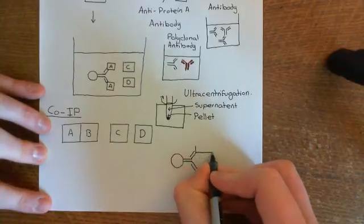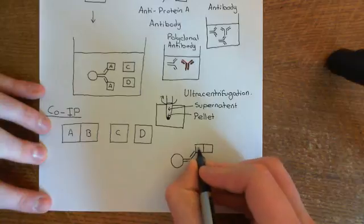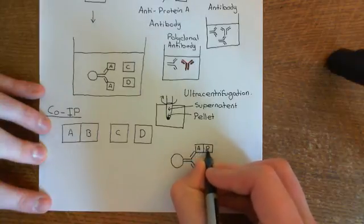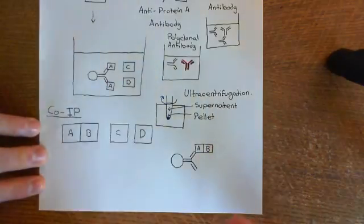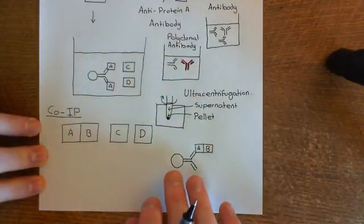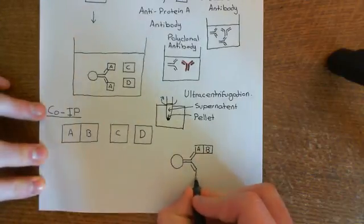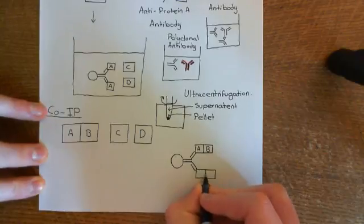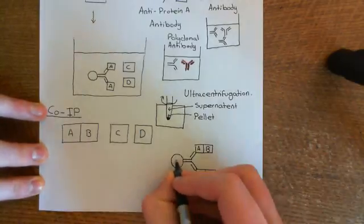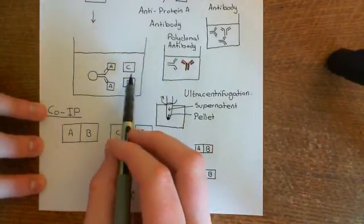So what will then happen is the whole complex of protein A and protein B this time will bind to that anti-protein A antibody. And now it's the same step. When you put these beads into the solution, what will happen is the protein complexes of protein A and protein B will end up bound to the antibody molecules, which are bound to the beads, and the protein C and the protein D will remain in solution, basically.